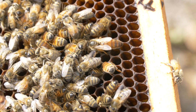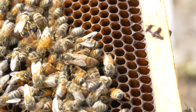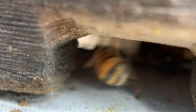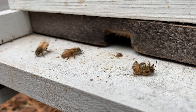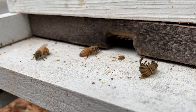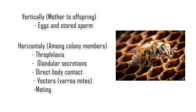Although the queen is protected by several social immune mechanisms in the colony, she is exposed to different environmental stresses during different life stages that can have a negative effect on her health and quality. Among these stressors, viruses are considered a major concern across different stages of the queen's life. Honeybee viruses can typically be transmitted through different means: vertically through eggs and stored sperm, and horizontally via trophylaxis, glandular secretions, direct body contact, vectors, or mating.